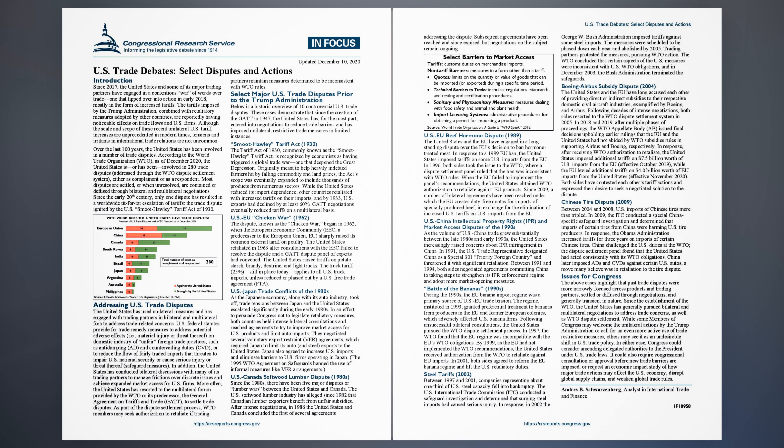Chinese Tire Dispute, 2009: Between 2004 and 2008, U.S. imports of Chinese tires more than tripled. In 2009, the ITC conducted a special China-specific safeguard investigation and determined that imports of certain tires from China were harming U.S. tire producers. In response, the Obama administration increased tariffs for three years on imports of certain Chinese tires. China challenged the U.S. duties at the WTO. The dispute settlement panel found that the United States had acted consistently with its WTO obligations. China later imposed anti-dumping (AD) and countervailing duties (CVD) against certain U.S. autos, a move many believe was in retaliation to the tire dispute.